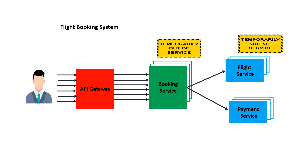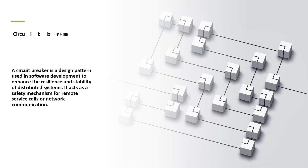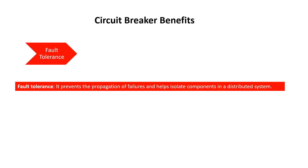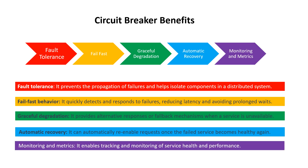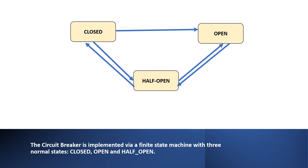This is the scenario where the circuit breaker will help us. A circuit breaker is a design pattern used in software development to enhance the resilience and stability of distributed systems. It acts as a safety mechanism for remote service calls or network communication. Circuit breaker has several benefits like fault tolerance, fail fast, graceful degradation, automatic recovery, monitoring, and metrics.